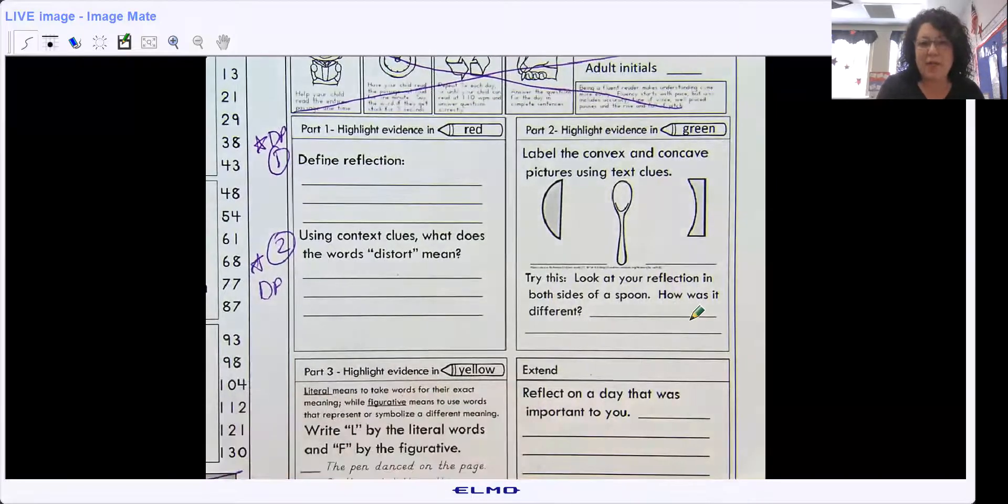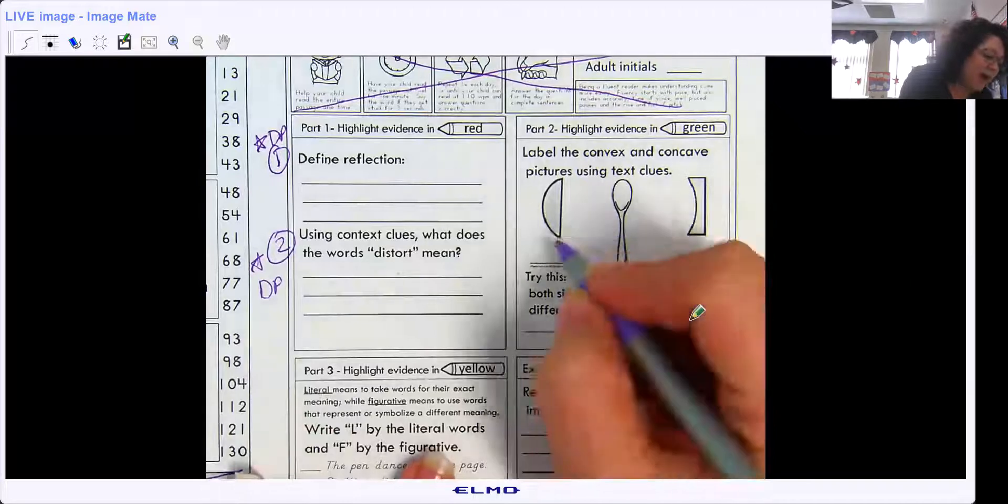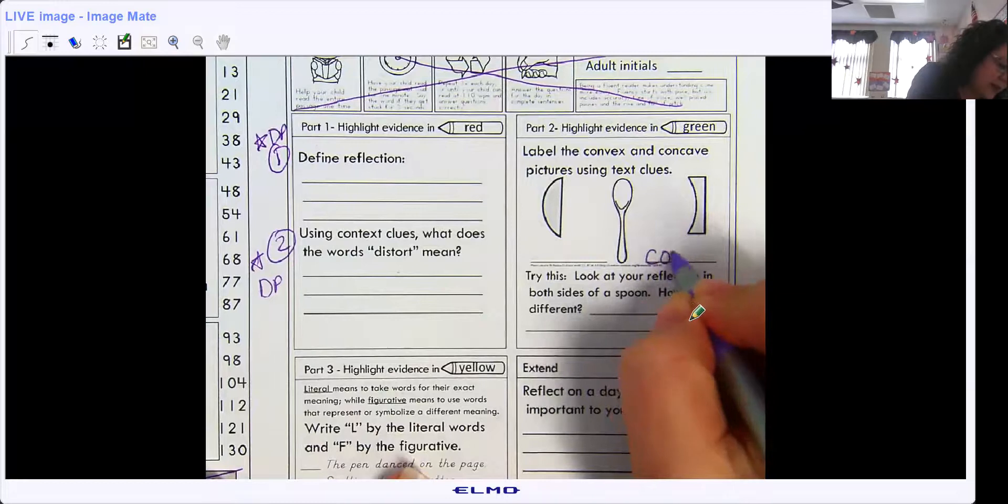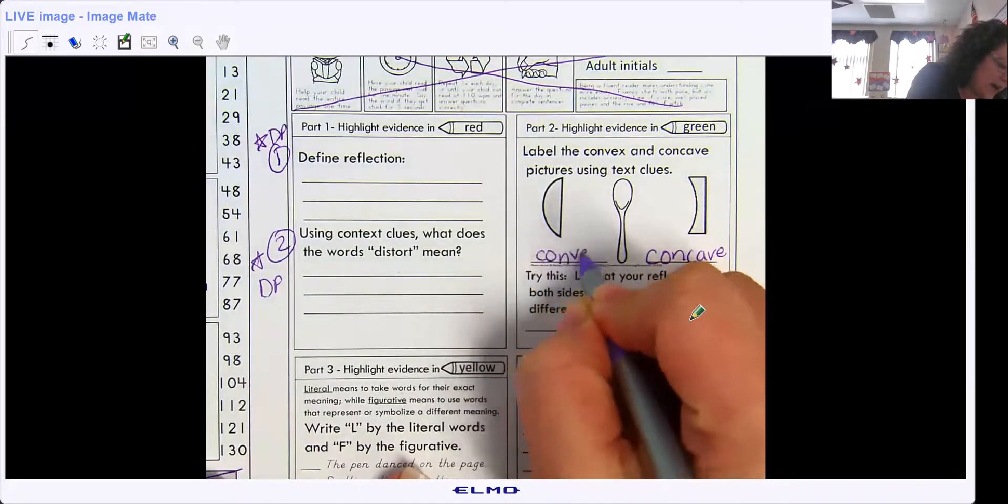We just briefly talked about that. So we're going to do part of this together. It says label. Remember concave, that's when you suck in like a cave. So this one would be concave. And the sticking out of your tummy is convex.